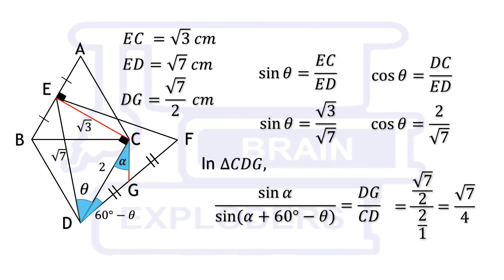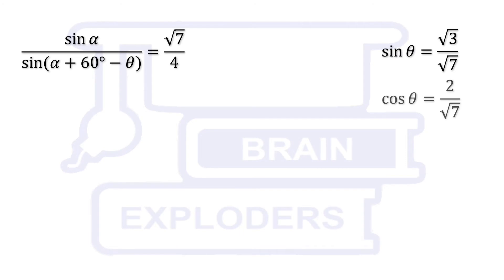We have to eliminate theta with the help of the values of sin and cos theta so that we can find the value of alpha. To solve such problems always try to get the expression having simple denominator. For this take the reciprocal of both LHS and RHS.